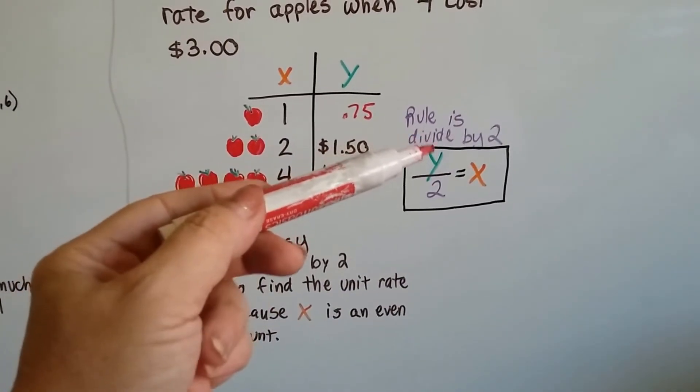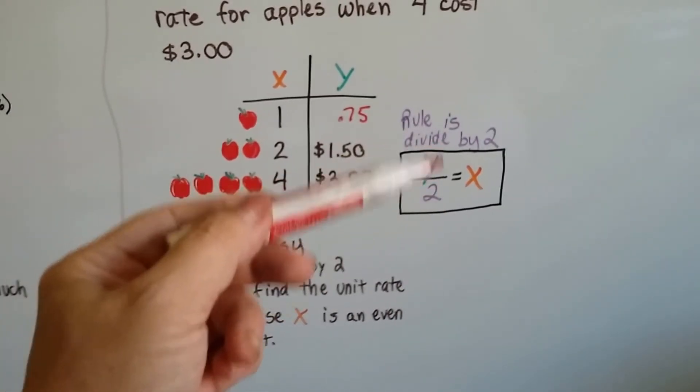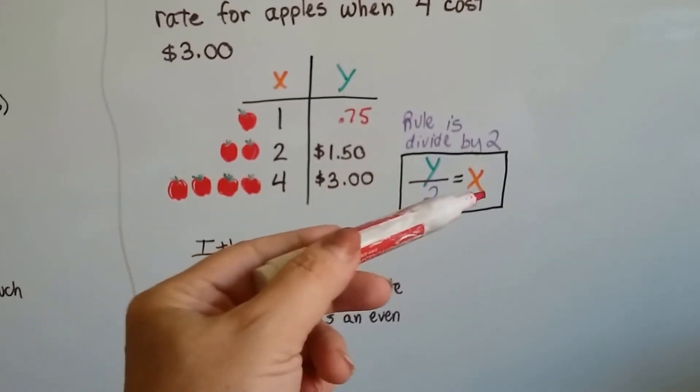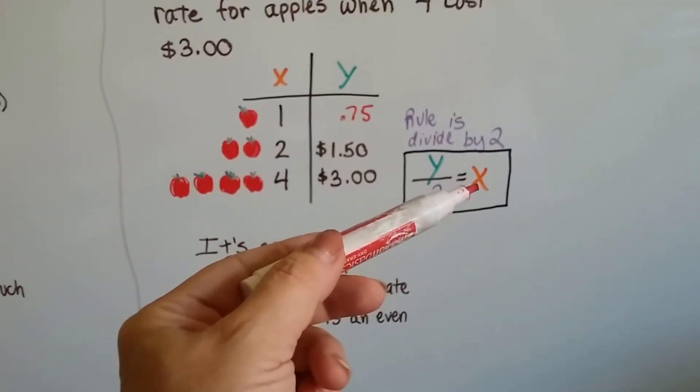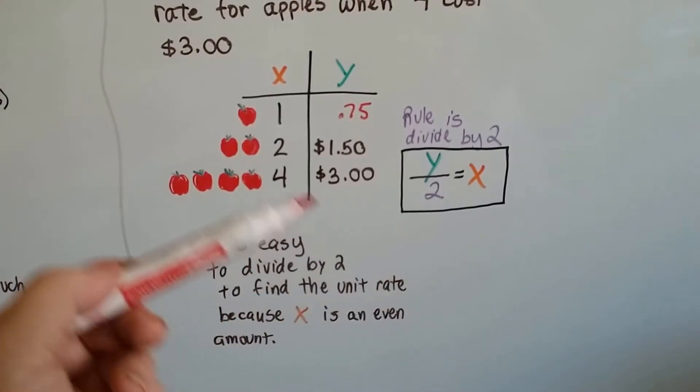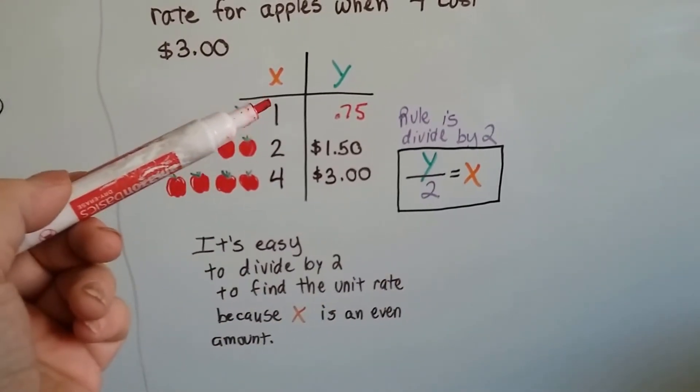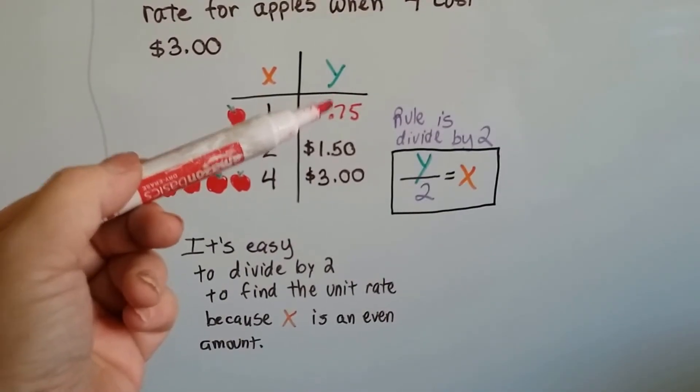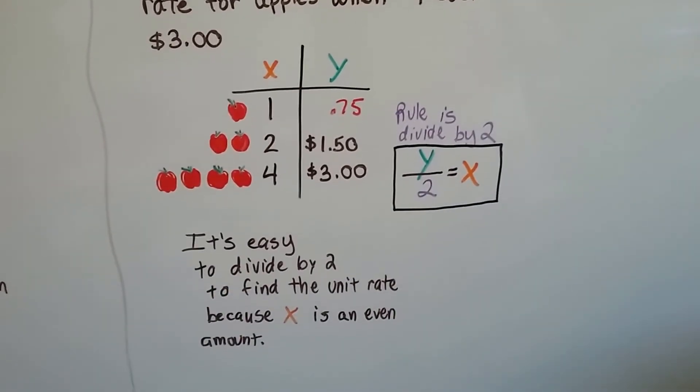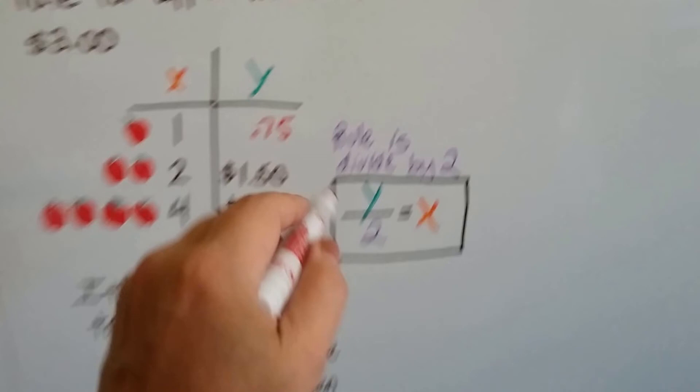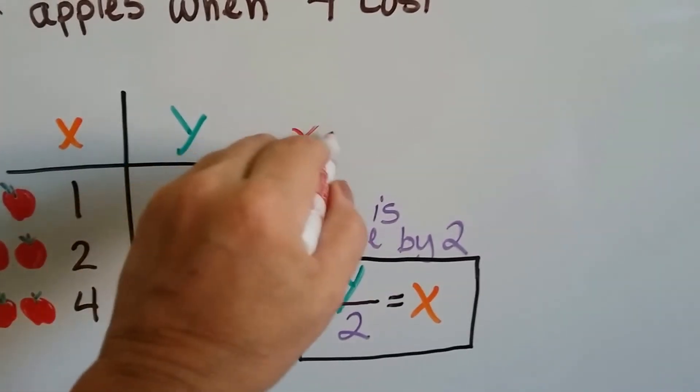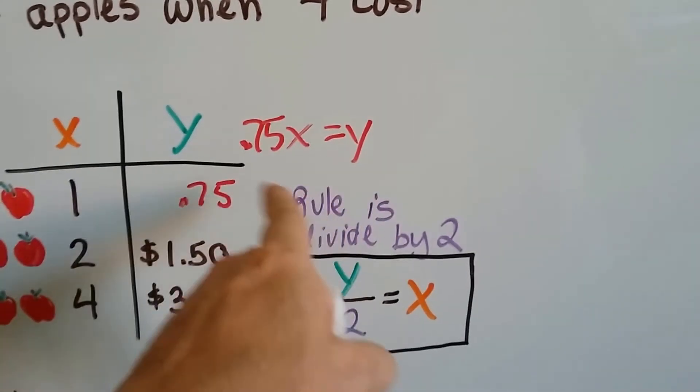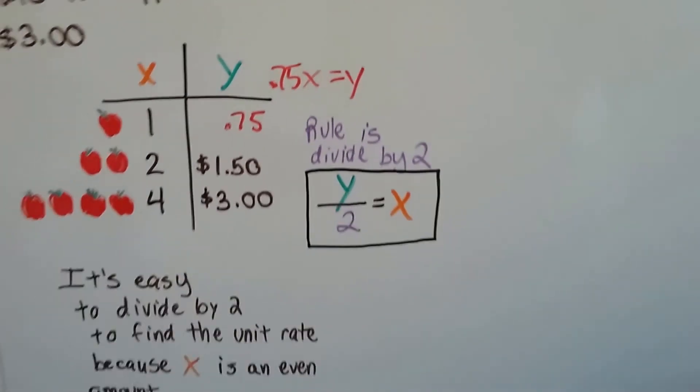So our rule was to divide y by 2. We divided each one of these by 2 and that told us what x was. Or we could say we can multiply x by 75 cents to get y. Either way. It could have been x times .75 equals y. That could have been the algebraic expression.